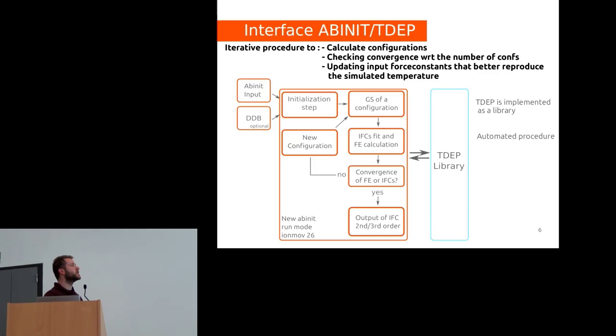There is a check to see if the free energy is converged. If it's not, it uses the newly calculated force constants to recreate new configurations and recalculates the ground state, adding them to the number of configurations to fit the force constants. When convergence is done, I can output the second- and third-order force constants that should be converged and represent the dynamics at a certain temperature.